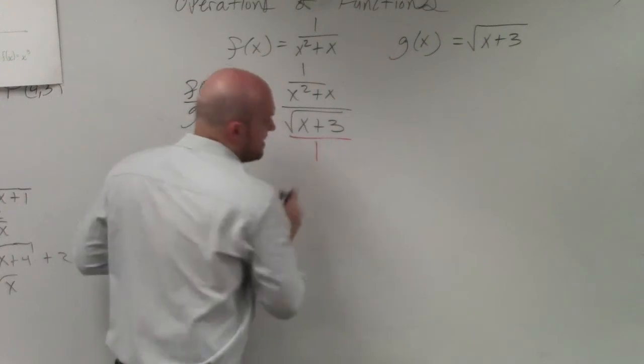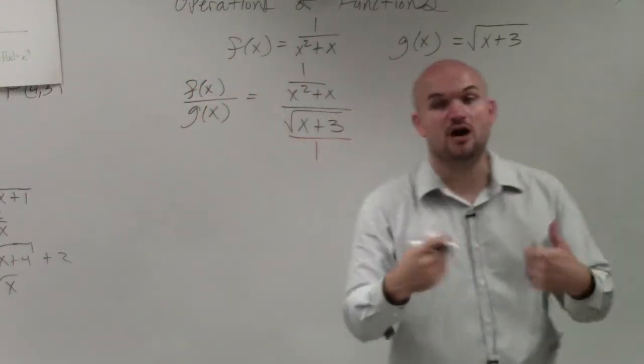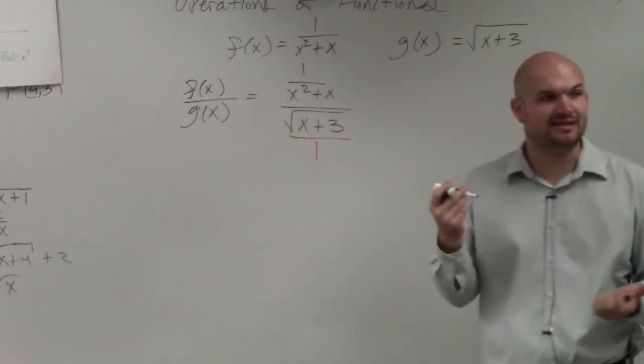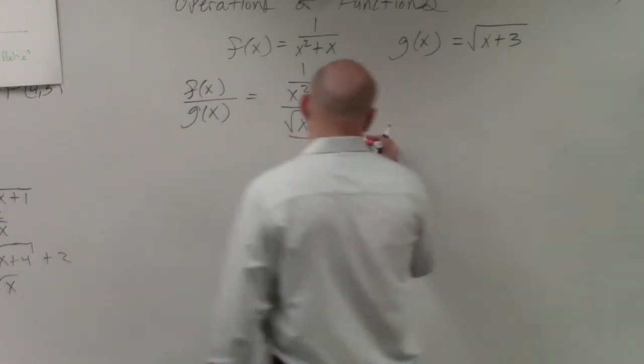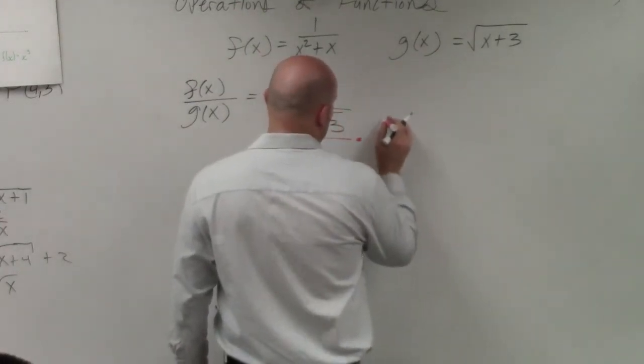If I have a fraction divided by a fraction, I always undo this by multiplying by the—starts with an R and rhymes with reciprocal. So if I multiply by the reciprocal, what's nice about that...